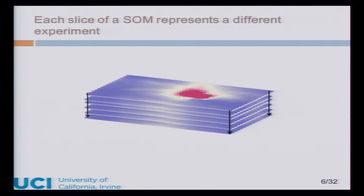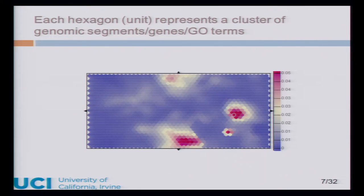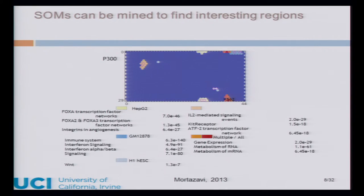SOMs are sort of like a 3D stack of images. Each slice of the stack represents a different experiment or dimension of your data set, and each slice is divided into hexagonal units. These represent a cluster of genomic segments, genes, or GO terms that have the same profile across all of the different experiments. This SOM runs on a toroid, so it's edgeless — if you go off the bottom you come up the top, and off the left you come off the right, so there are no weird edge cases. SOMs have been used to mine interesting results in the human and mouse ENCODE papers and in recent work by Morozov.